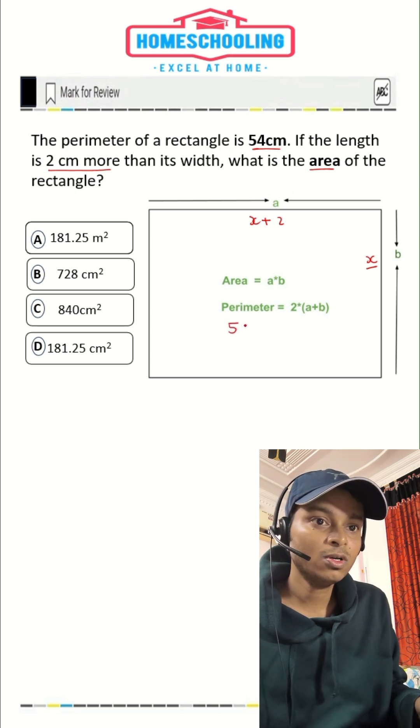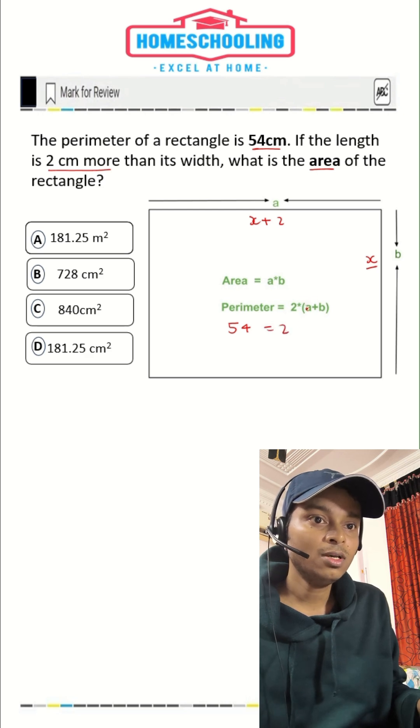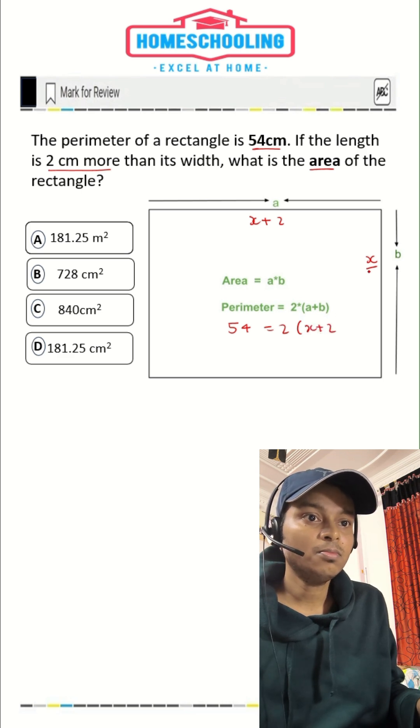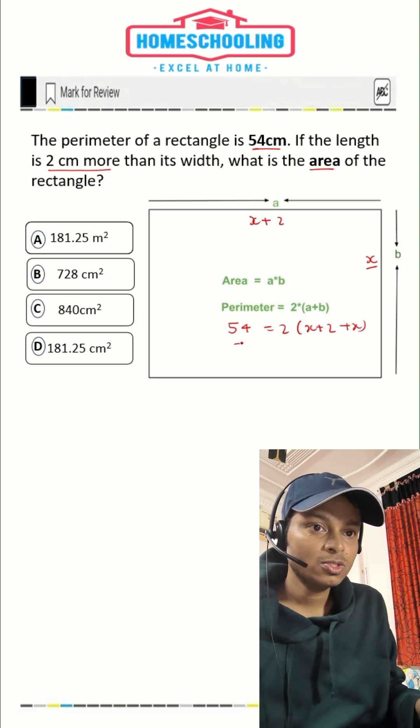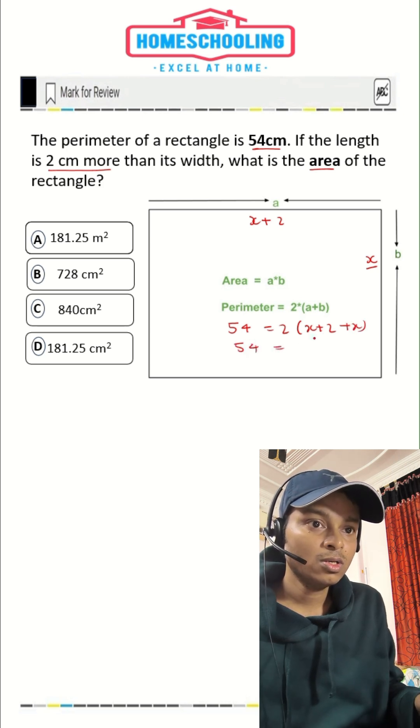So 54 is equal to two times A, that is length. Length we have taken as X plus two. So X plus two plus breadth. Breadth B we have taken as X. So this one would be, we can write this as X plus X, that would be two X plus two.